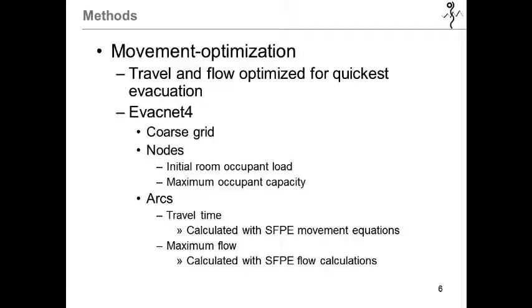EvacNet+4 was used as a movement optimization model, which optimizes travel and flow for quickest evacuation times. EvacNet+4 uses a coarse grid to represent the building with nodes and arcs. Nodes are building elements such as hallways, stairways, rooms, and these elements are given an initial occupant load and a maximum capacity.